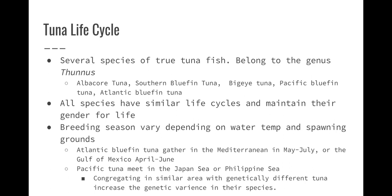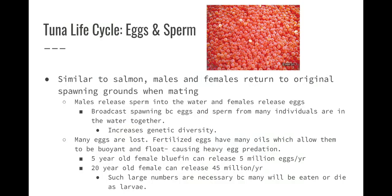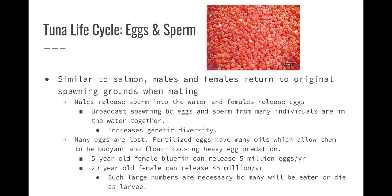The breeding season depends on water temperature and spawning location. The Atlantic bluefin tuna gathers in the Mediterranean in May and July, or the Gulf of Mexico in April and June. Pacific tuna meet in the Japan Sea or the Philippine Sea. Congregating in similar areas with genetically different tunas helps increase genetic variance in their species. Males release sperm into the water and females release the eggs — they are broadcast spawners because eggs and sperm from many individuals are in the water together. This increases genetic diversity, but there's a lot of waste, and it takes a lot of energy for females to make so many eggs.